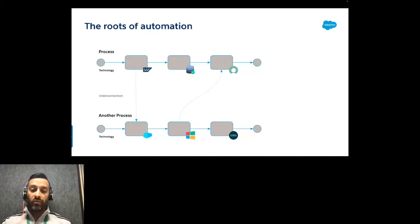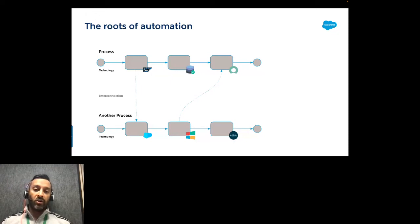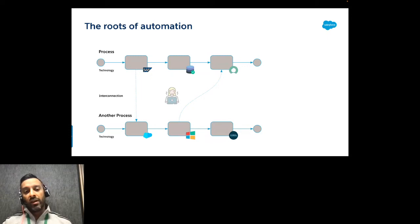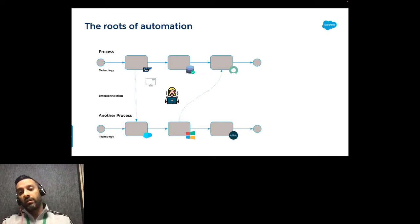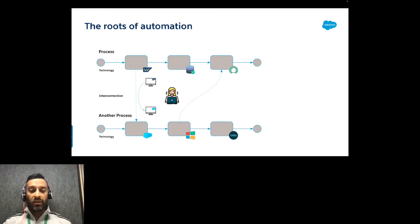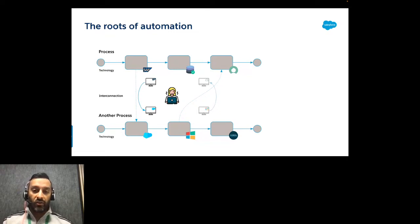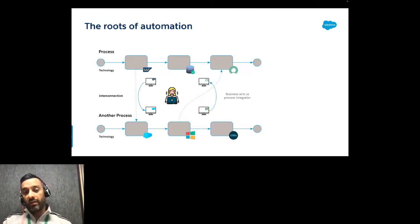System integration would solve this seamlessly, but many organizations don't have the skill set or people to invest in it. So what they do is find someone who understands the process — a business-side persona — who does the interconnection manually: opening SAP, grabbing order information, copying it, opening Salesforce, and pasting it into the opportunity.